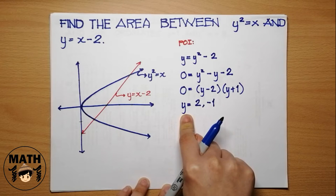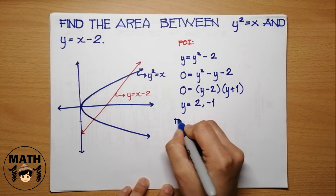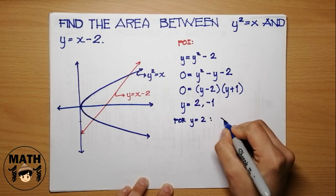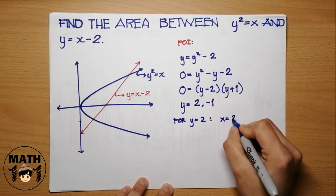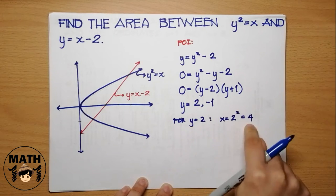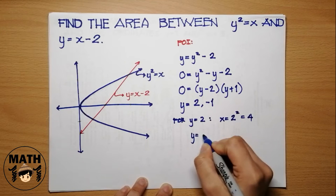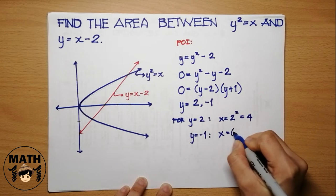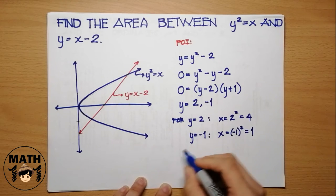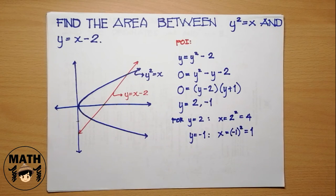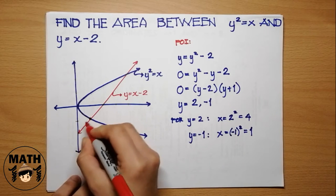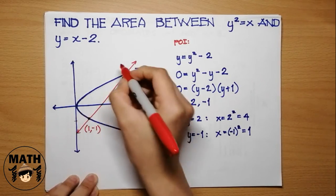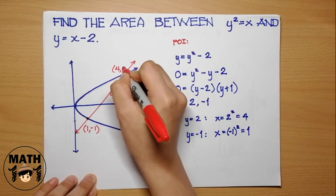Hanapin natin ngayon yung corresponding x coordinate ng 2 and negative 1. For y equals 2, gamitin natin yung equation x equals y squared, so square lang natin ito — the value of x for y equals 2 is 4. And for y equals negative 1, let's use x equals y squared: negative 1 squared is equal to positive 1. So, yung points of intersection natin ay (1, negative 1) and (4, positive 2).